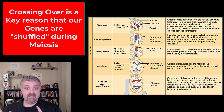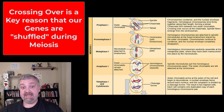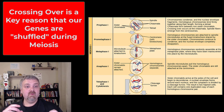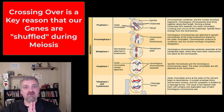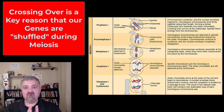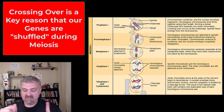So it looks the same but there are a couple of really important things that are happening here. During prophase one, we have what's called synapsis where these chromosomes are going to be connected. The sister chromosomes are going to be connected to one another and that leads to crossing over or a swapping of genes.